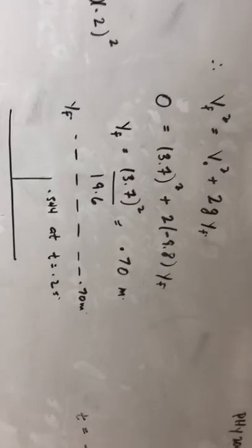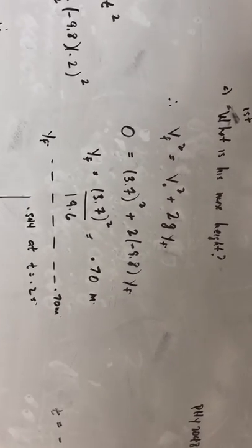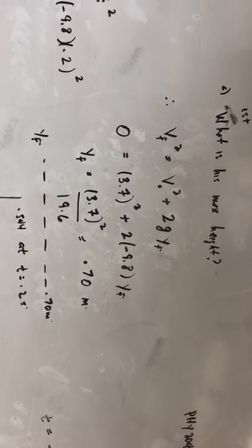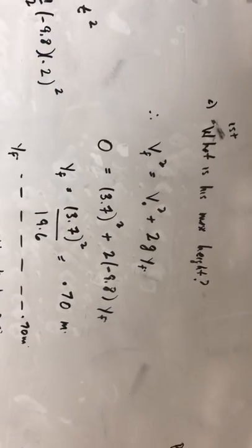What's his maximum height? His maximum height, as we all learned and we all know, occurs when the final velocity is zero. That v final and that v final are different because now it's a different problem.